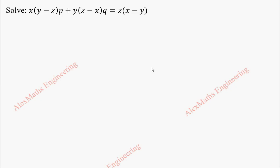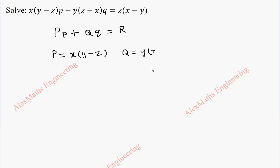Hi students, this is Alex here. In this video we are going to solve the given partial differential equation. This is of the form capital P times small p plus capital Q times small q equal to capital R. From this we understand capital P is x(y−z), capital Q is y(z−x), and capital R is z(x−y).